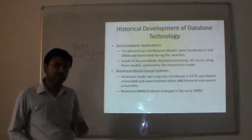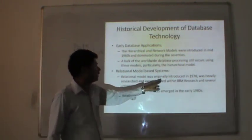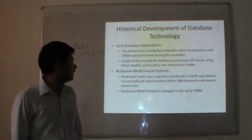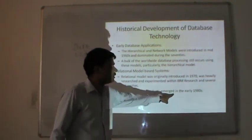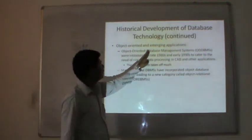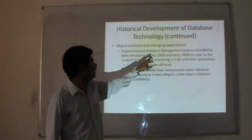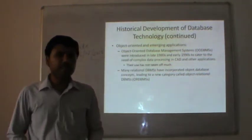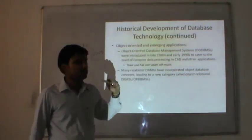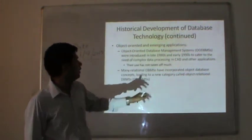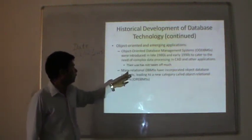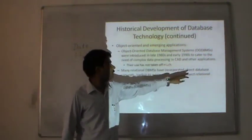What is the relational model? Here the things are relations. Relational models were originally introduced in the 1970s; they were heavily researched and experimented within IBM research and several universities. Industrial database products emerged in early 1980s. Object-oriented and emerging applications: object-oriented database systems (OODBMS) were introduced in the 1980s and early 1990s to cater to the needs of complex data processing in engineering and other applications. Their use has not taken off much, but many relational database management systems have incorporated object-oriented database concepts.